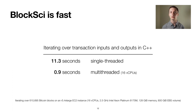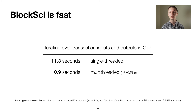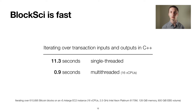These optimizations make BlockSci really, really fast. We can analyze the Bitcoin blockchain in a matter of seconds. Using the C++ interface, we can iterate over more than 600,000 blocks, including more than 480 million transactions in 11.3 seconds single-threaded, and much faster using multithreading, depending on how many cores you have available.